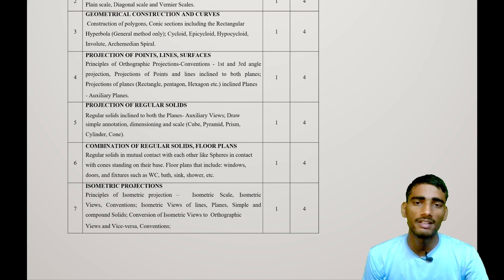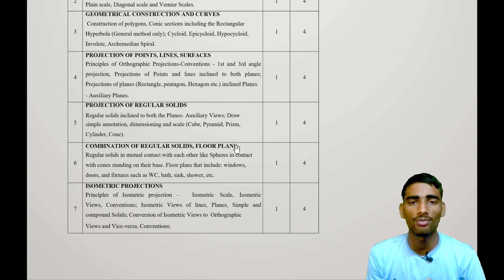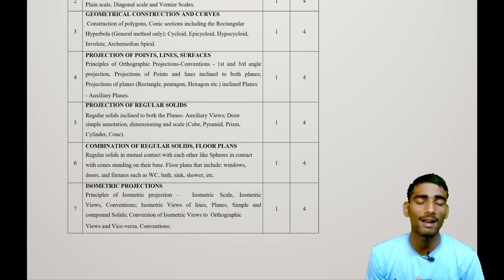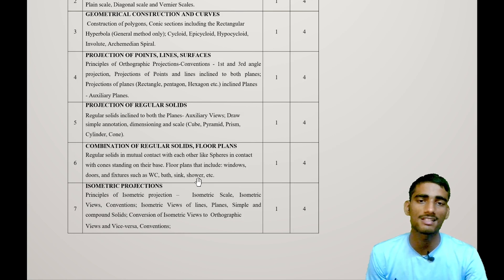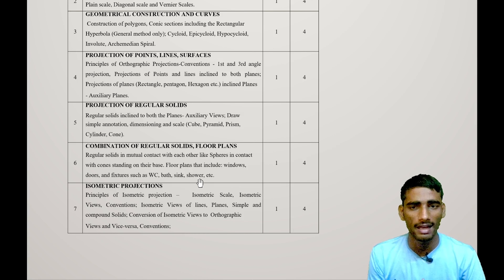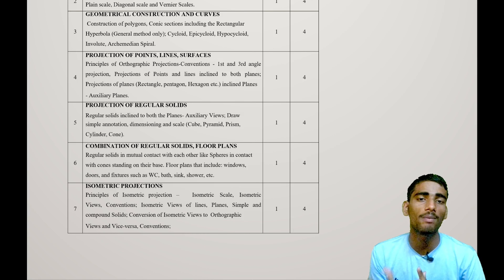Sixth, you have to study the Combination of Regular Solids and Floor Plans. This includes studying various floor plan elements such as windows, doors, fixtures, sinks, WC, and bath. Simply put, you study regular solids and the basics of floor planning.